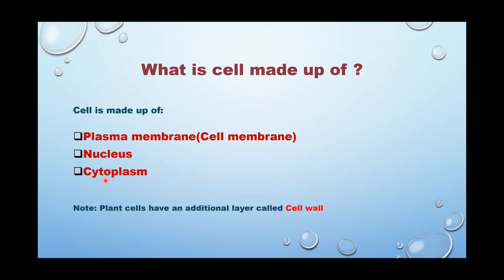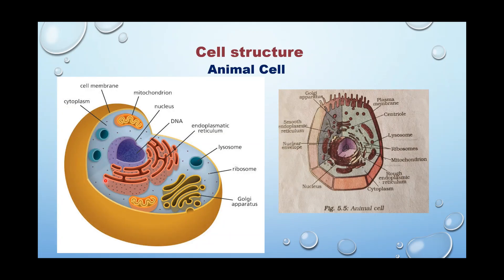We will study the plasma membrane in detail. On the right-hand side is a snippet from the textbook, and on the left is an animal cell for clarity. The outermost layer is the plasma membrane, then the nucleus, and the cytoplasm, which is the fluid part. Cell organelles include mitochondria, Golgi, lysosome, ribosome, endoplasmic reticulum, and nucleus.